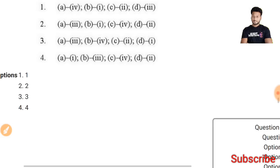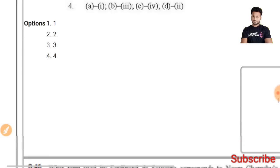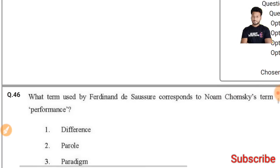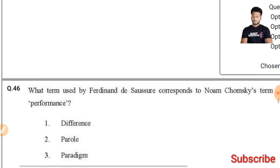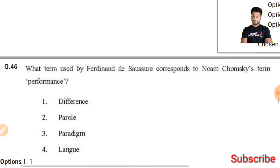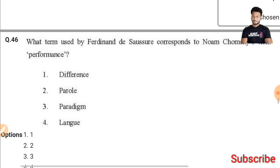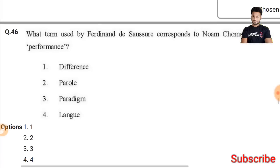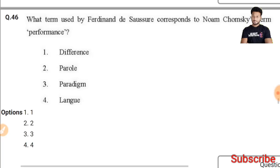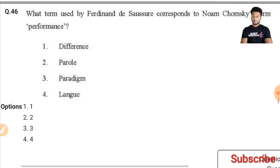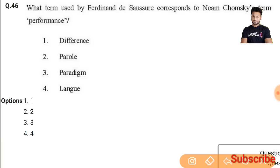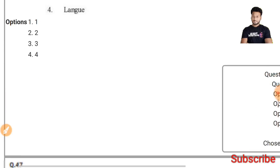Question 46: What term used by Saussure corresponds to Noam Chomsky's term 'performance'? Saussure's corresponding term is 'parole.' The right answer is parole.